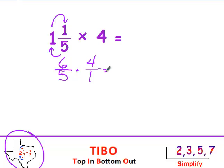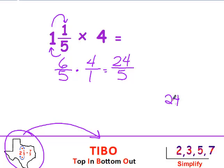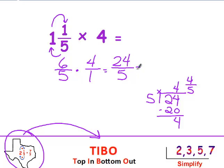And now I multiply across. 6 times 4 is 24. 5 times 1 is 5. I see that my answer is improper, so I'm going to need to Tebow it. That changes it from improper to mixed. I'm going to top in and bottom out. I can get 4 groups of 5 out of 24. 4 times 5 is 20. I have a remainder of 4. That's my numerator, and 5 is my denominator. So it is 4 and 4 fifths.